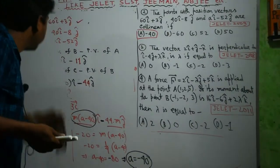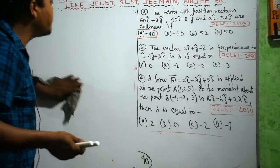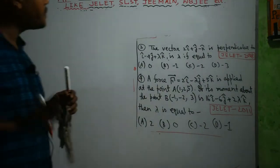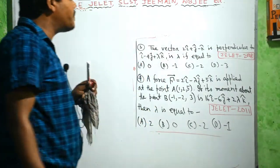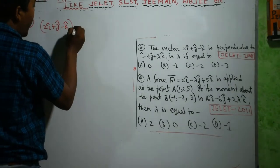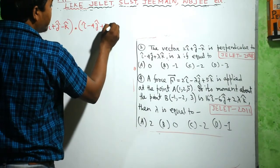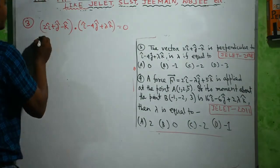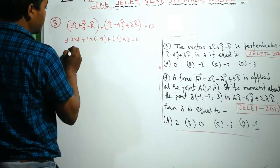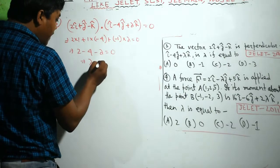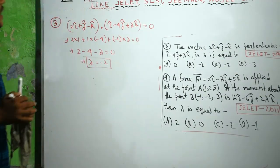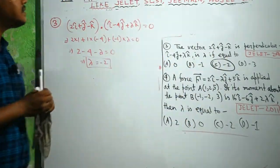Problem 3: The vector 2i cap plus j cap minus k cap is perpendicular to another vector. This question appeared in 2008. Two vectors are perpendicular to each other means their dot product is 0. So 2 times 1 plus 1 times minus 4 minus 1 times lambda equals 0, giving 2 minus 4 minus lambda equals 0, so lambda equals minus 2. For lambda equals minus 2 the vectors are perpendicular. The option is C.